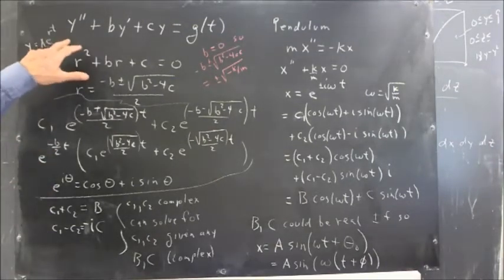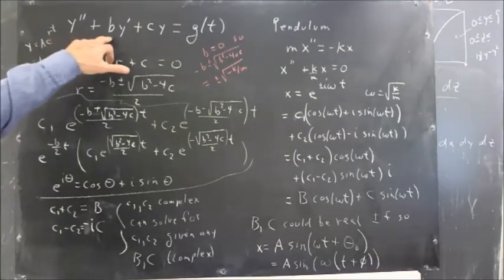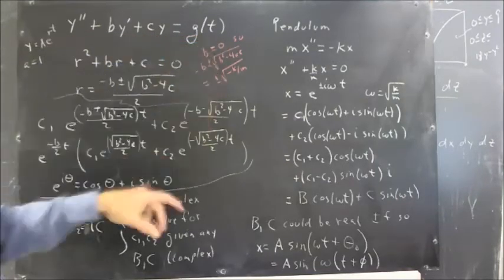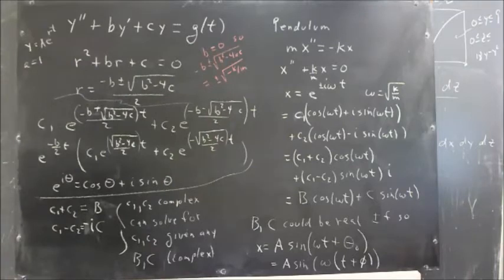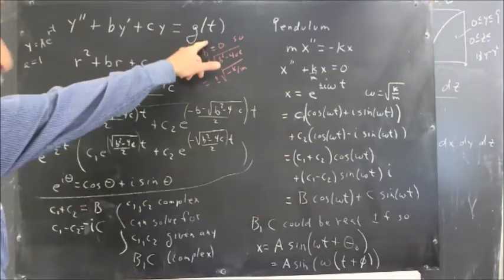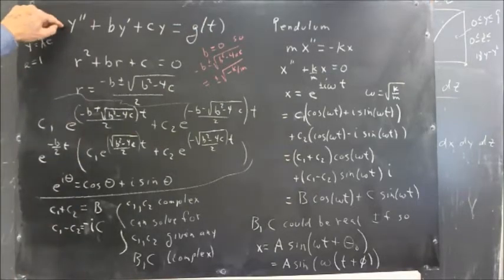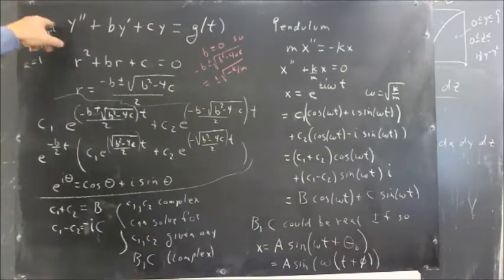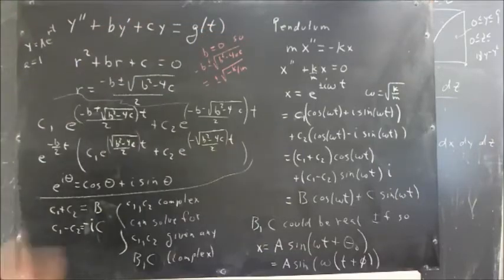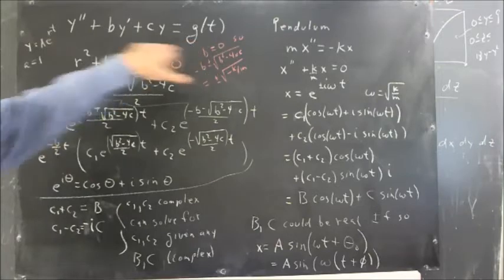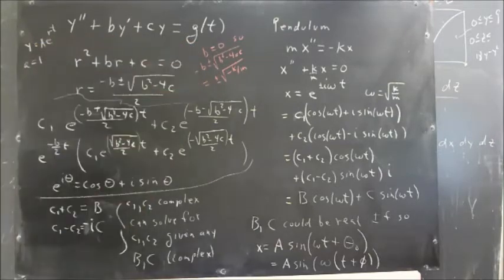In general, we have the equation y double prime plus b y prime plus c y equals g of t. General second order equation with constant coefficients, non-homogeneous because of the g of t. Now often you have an a in front of y double prime, but we can divide this entire equation by a and get it into this form without loss of any solutions.